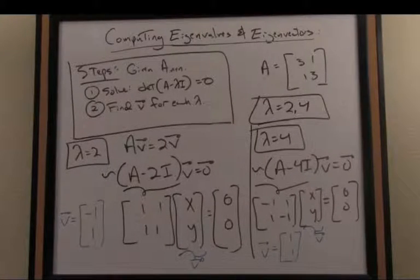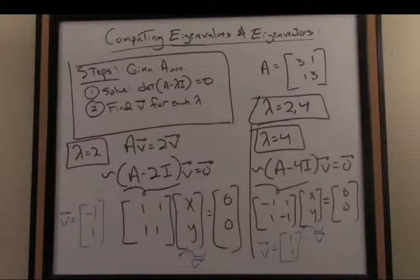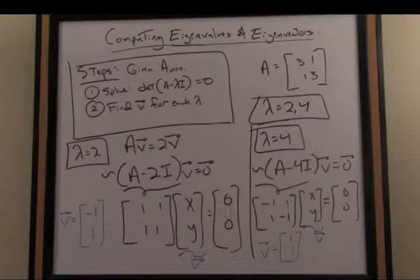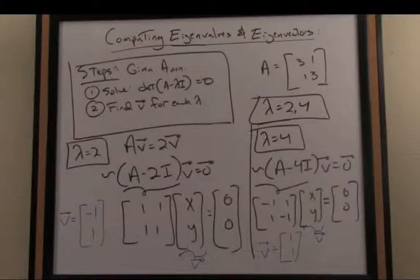So there is a nice computational example of finding eigenvalues and eigenvectors by hand for a matrix. And the beauty of this is, although this was a relatively simple case with a 2 by 2 matrix, this procedure generalizes for higher dimensional matrices. And that then concludes our section on eigenvalues and eigenvectors.